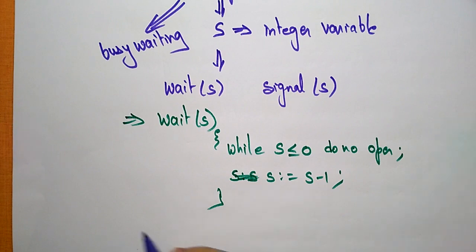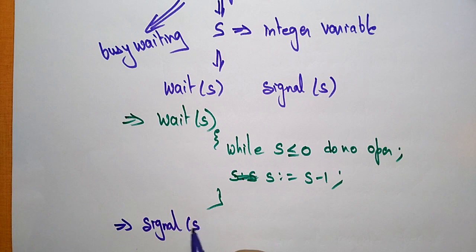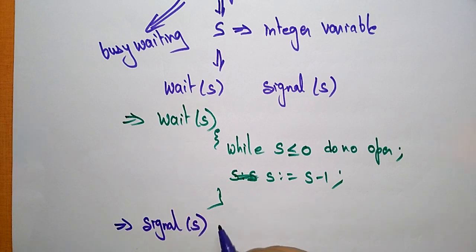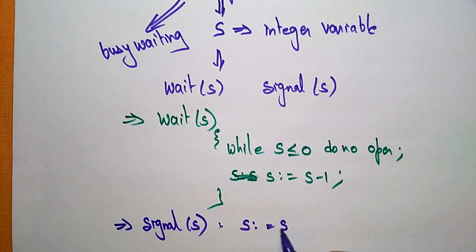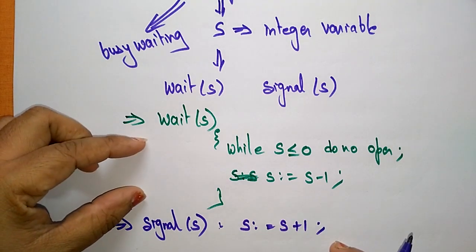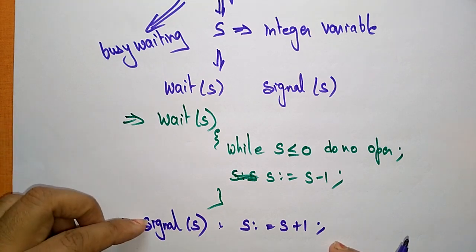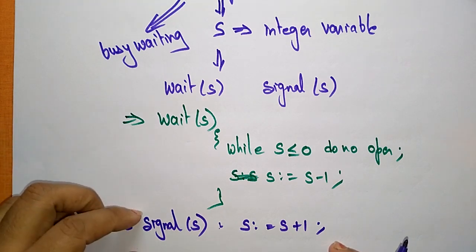Coming to the signal operation — the next atomic operation is signal(S), which is used by the semaphore variable. Signal(S) indicates S equals S plus 1. So wait performs a decrement operation and signal performs an increment operation.